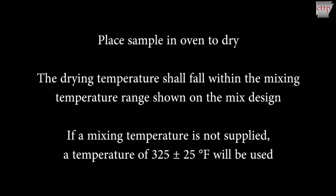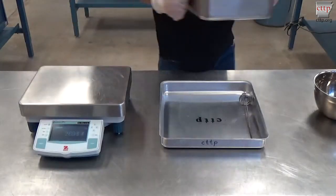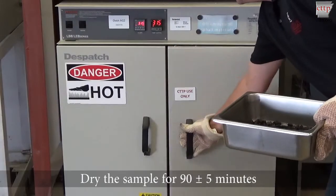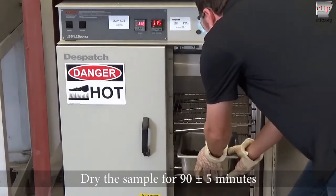Place the sample container in an oven to dry. The drying temperature shall fall within the mixing temperature range shown on the approved mix design. If a mixing temperature is not supplied, a temperature of 325 plus or minus 25 degrees Fahrenheit will be used.